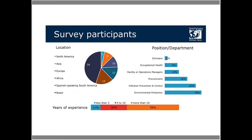Regarding the results, a total of 87 organizations completed the survey. Translating the questions into five languages allowed us to have a good international reach, and the numbers in the chart show the number of organizations that answered from each region. Within these organizations, survey respondents have roles mainly related to environmental protection, infection prevention and control, and procurement. Almost two-thirds of respondents have more than 15 years of experience in their roles.